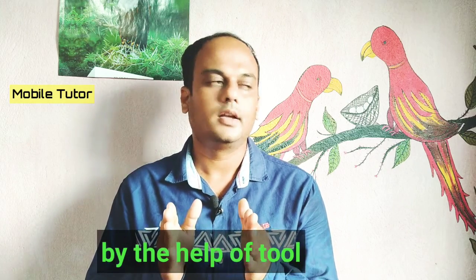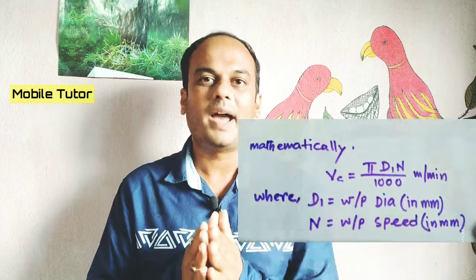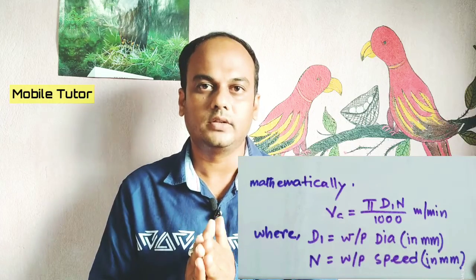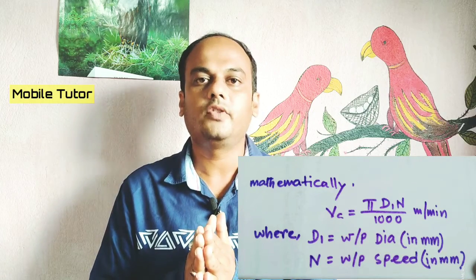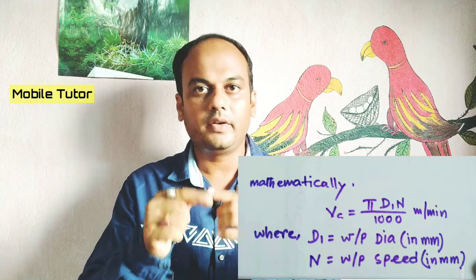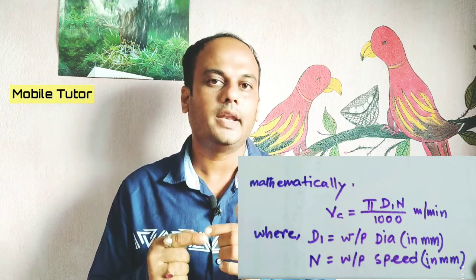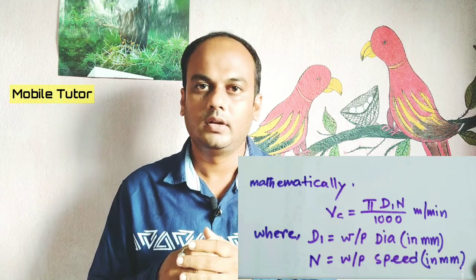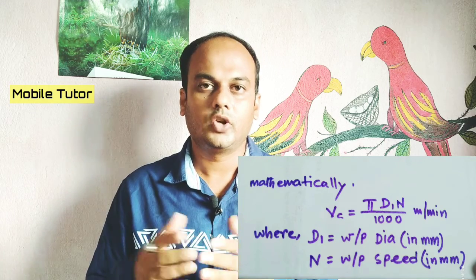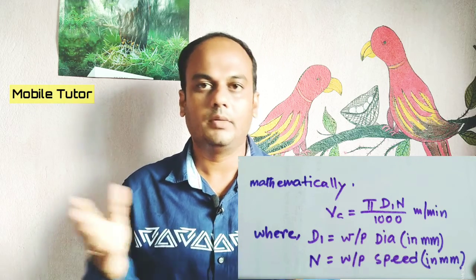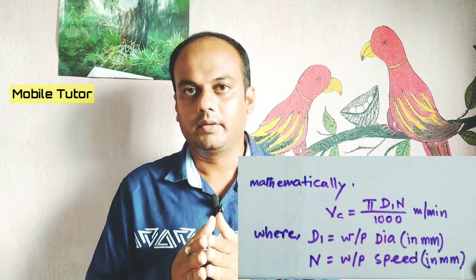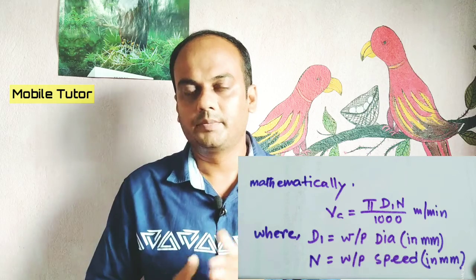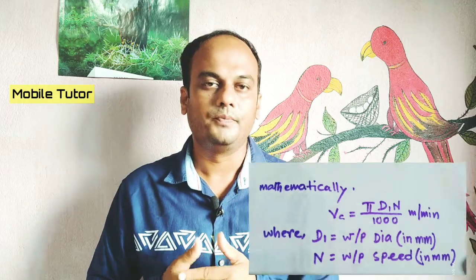Cutting speed formula: pi*d*n divided by 1000. Here, pi*d represents the peripheral distance of the job, and n is the RPM of the job.